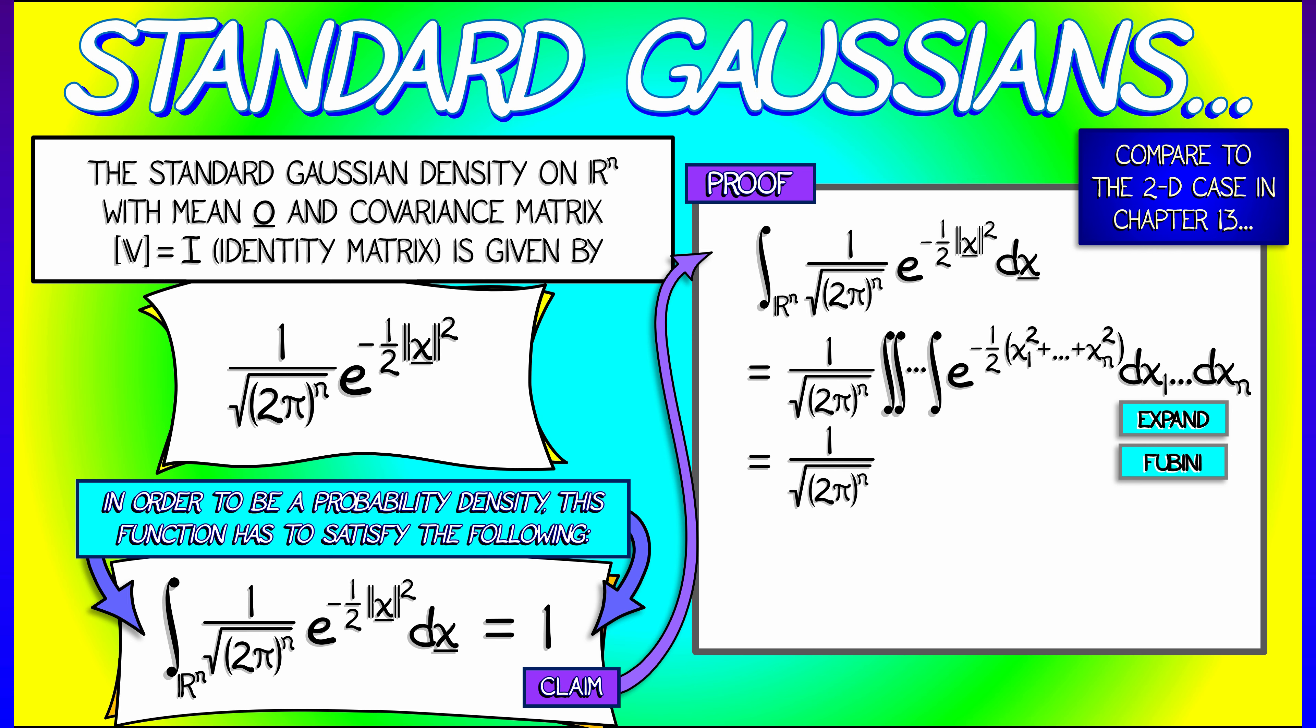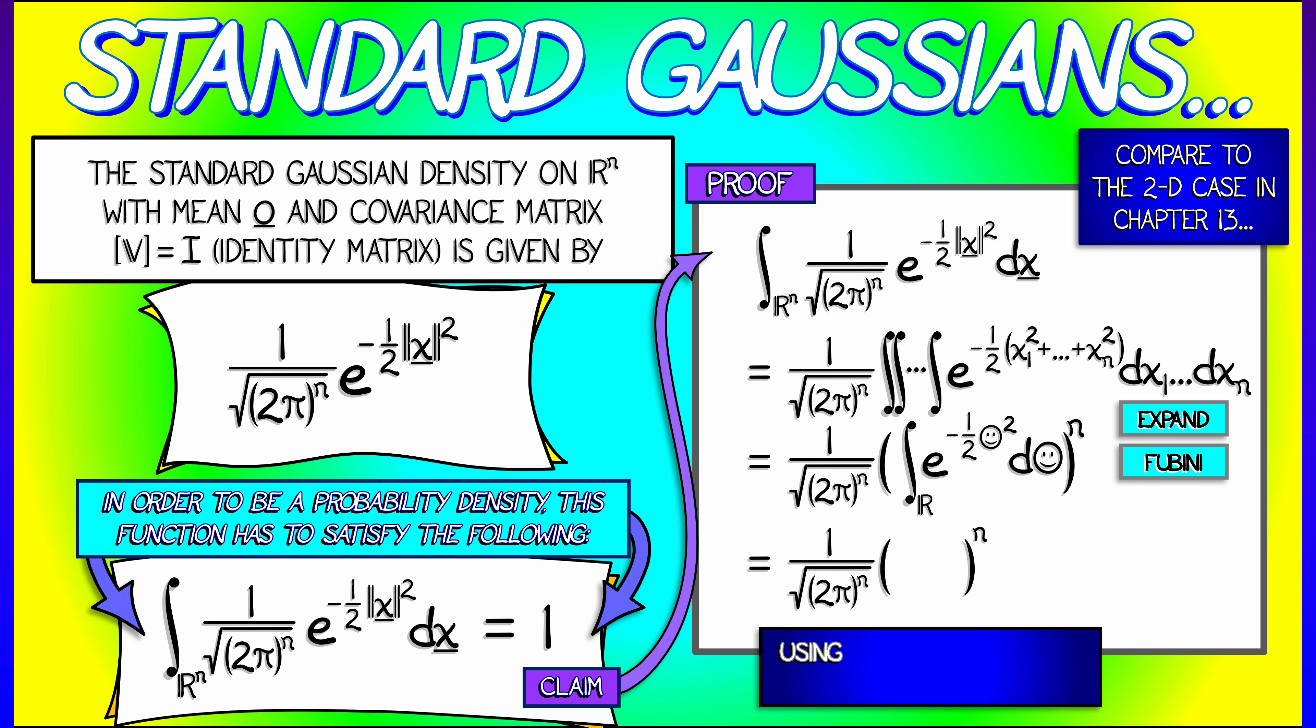Now, by the Fubini theorem, we can expand that out and break it up into a product of n single integrals over the reals, where using a dummy variable, smiley, this is e to the minus one half smiley squared d smiley. Now we've done that integral before. That's a one-dimensional Gaussian that has integral square root of 2π, and that is where our normalization constant comes from, because we had n of those. Okay, so that's that.